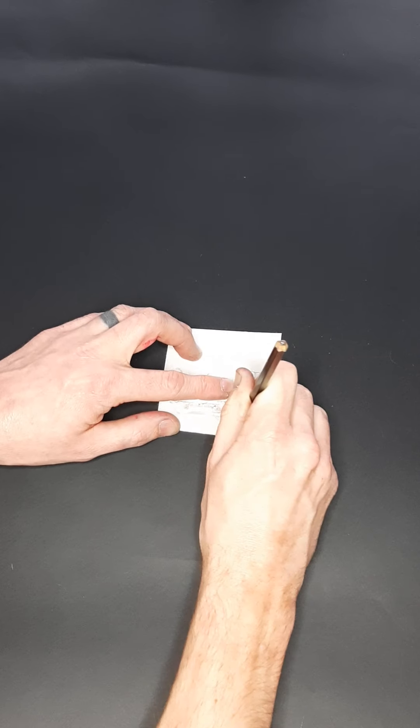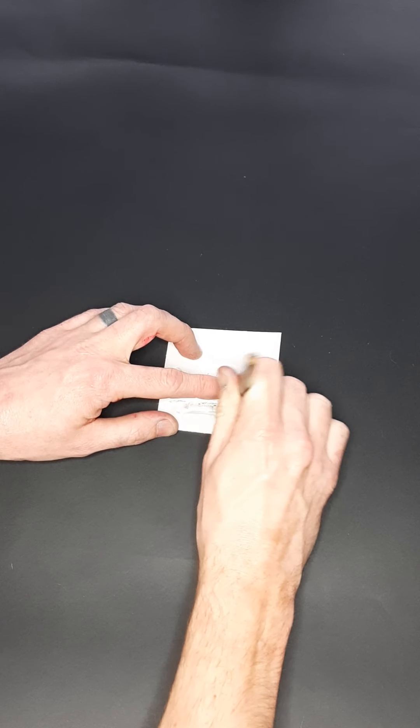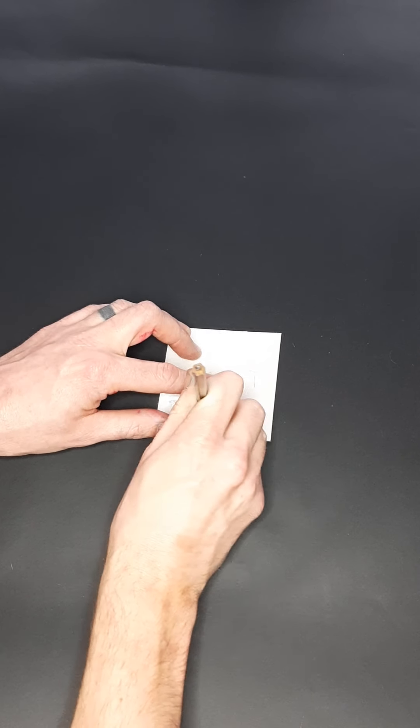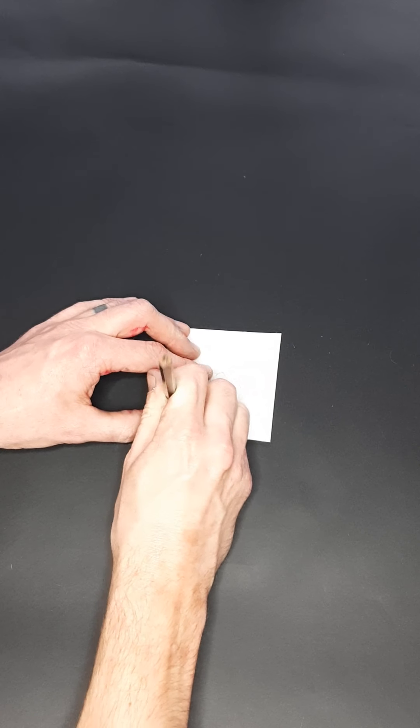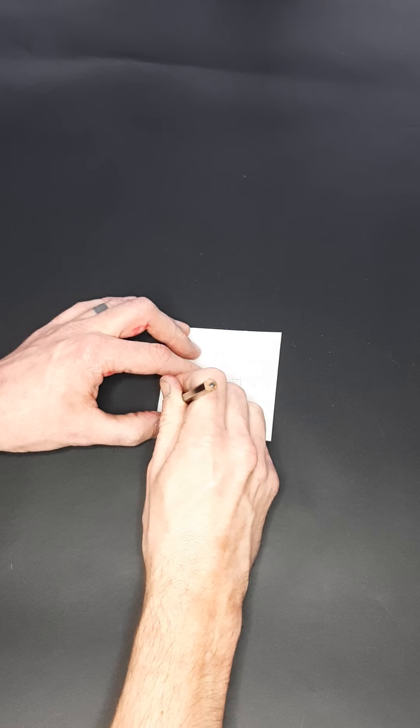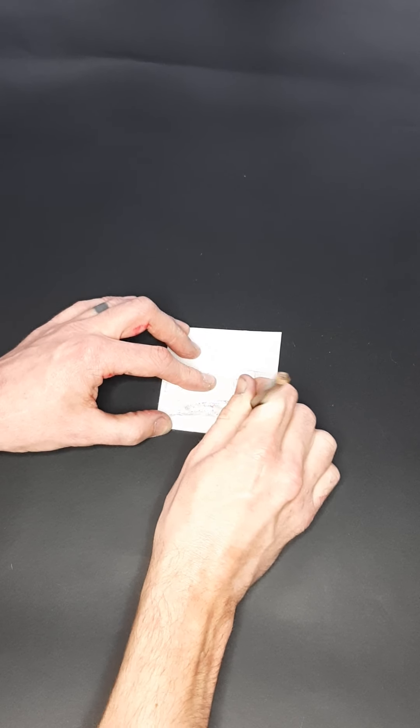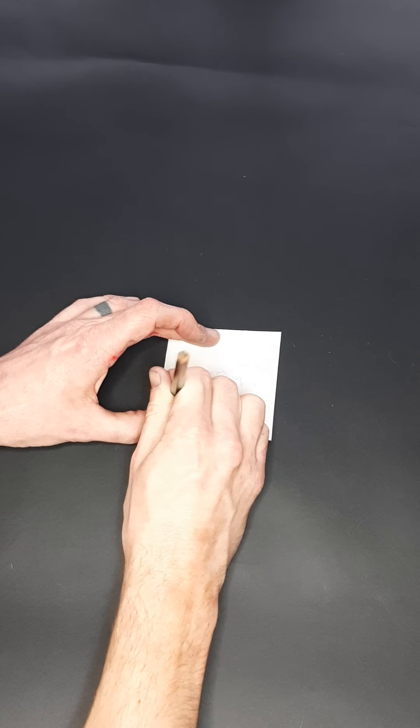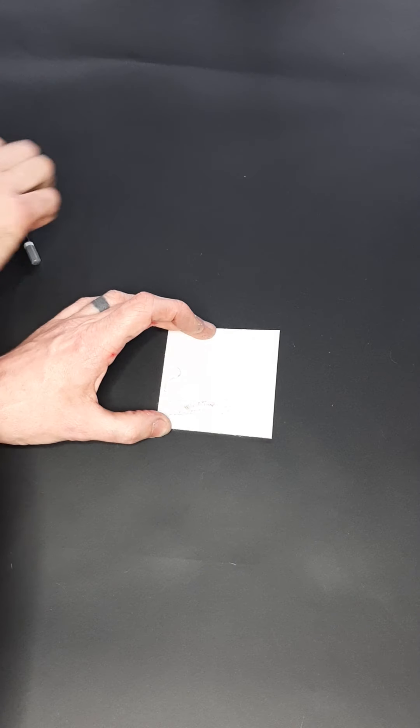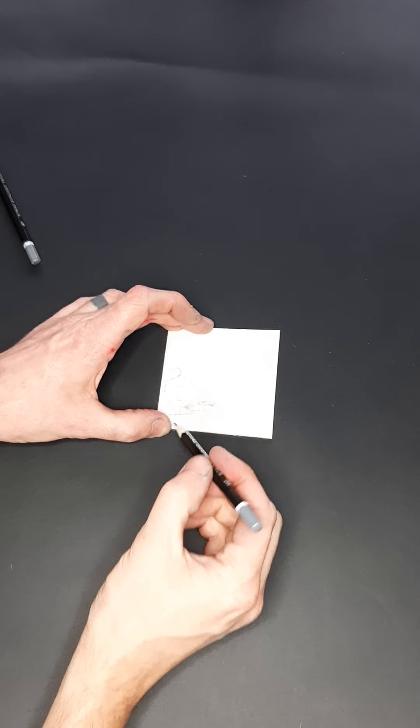Any areas you press down, whichever tool or pencil you use, the compressed areas, the bits you squish or cut, they will come out as white space. Whatever colored paper you use will come through these spaces. It's this raised polystyrene that's left that will take up the ink.